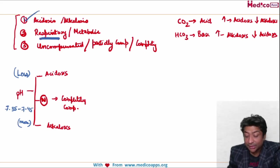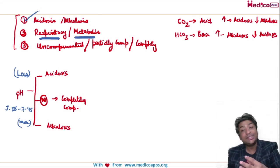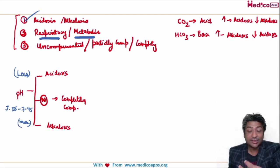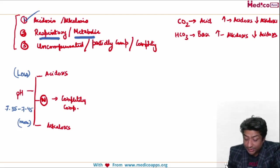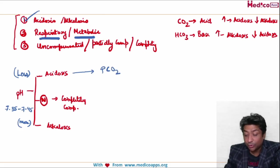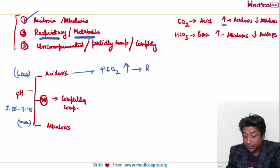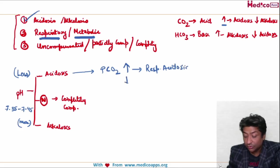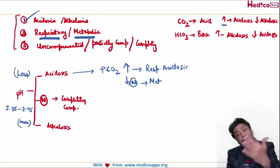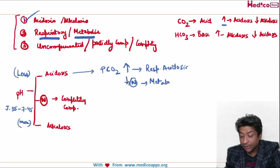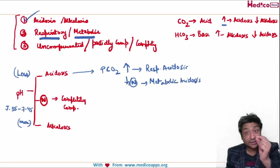The second question is whether the pathology is respiratory or metabolic. It is very easy to identify respiratory. For example, if it is respiratory acidosis, what should happen to the pCO2? pCO2 should increase. So if pCO2 is increasing it is respiratory acidosis. If the pCO2 is either decreasing or normal, then it is a case of metabolic — because only two things are there. If it is not respiratory it will be metabolic acidosis.